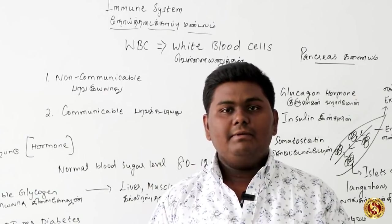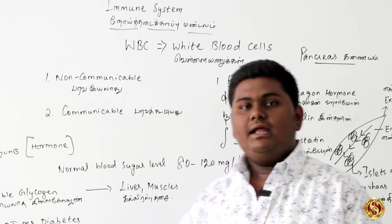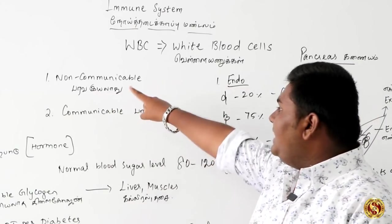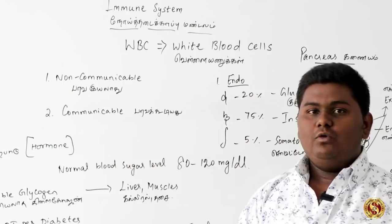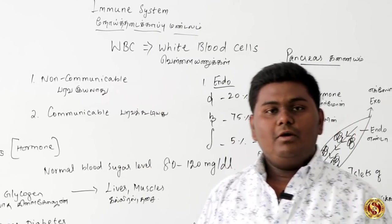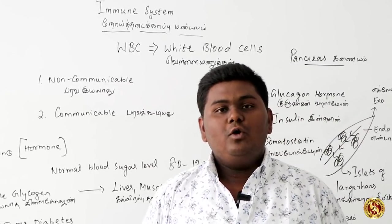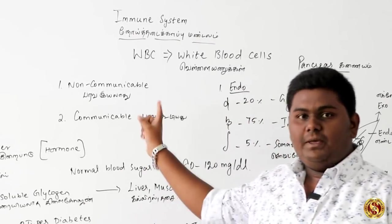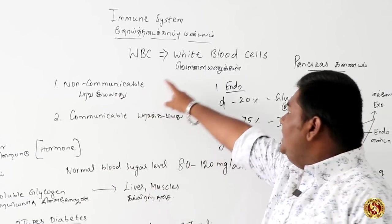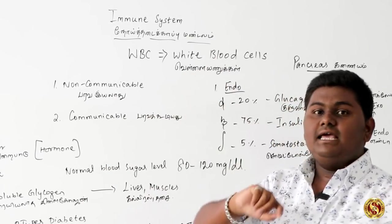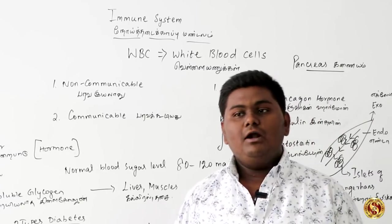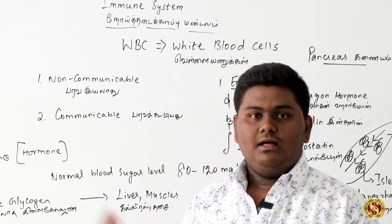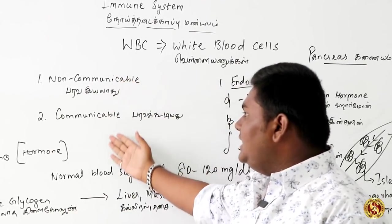There are two types of diseases: communicable and non-communicable. In our human body, the important role of the immune system is WBC, which means White Blood Cells, also called Leucocytes. WBC plays an important role in defending the body.